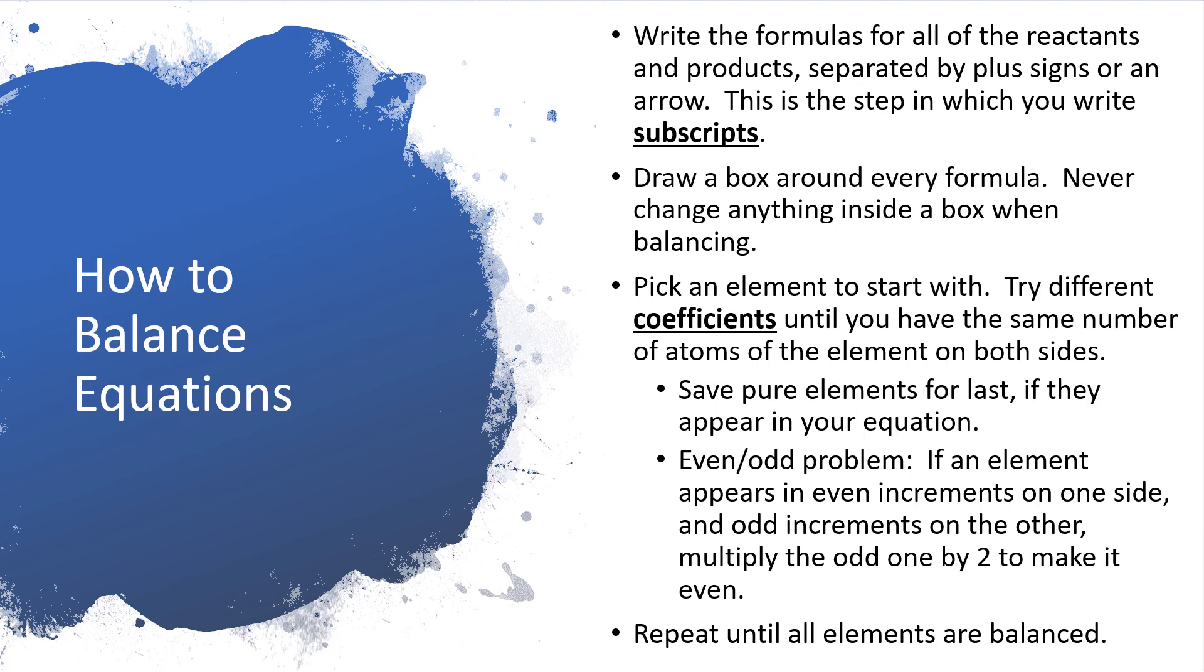Something else that will pop up from time to time is what I like to call an even-odd problem. We may have a subscript on one side of the equation on an element that's like a 2. So we always get that element in lumps of 2. But on the other side of the equation, we have a subscript of 3. And you can't easily balance an even number with an odd number. So what I like to do is turn the odd number into an even number by starting it with a coefficient of 2. And then when we multiply that coefficient of 2 times the odd number subscript, we end up with an even number of atoms. That often gets us going in the right direction.